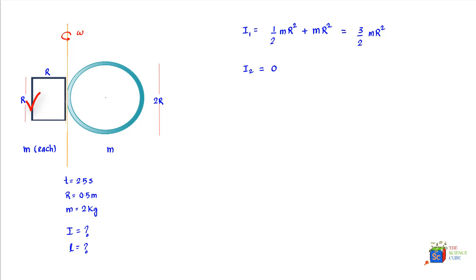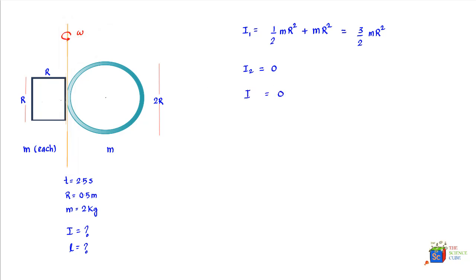For the horizontal bar, imagine it were rotating about an axis through its center — its i value would be zero. Since it has been shifted from that central position to its current position, we apply the parallel axis theorem. The bar has moved a distance r from the axis through its center of mass, so I₃ = 0 + m·r² = mr².